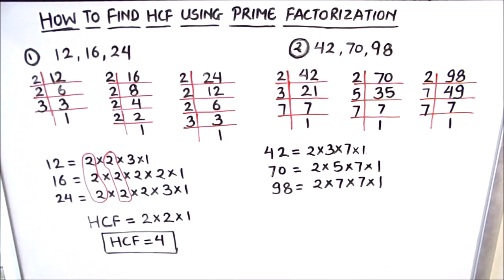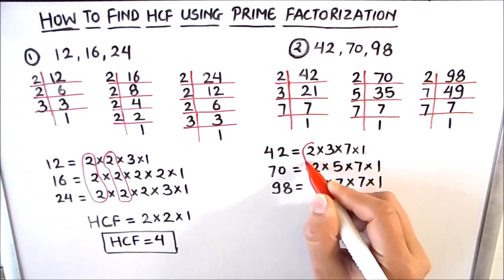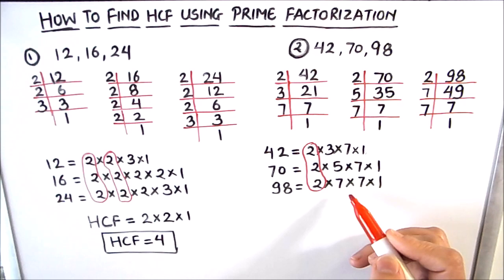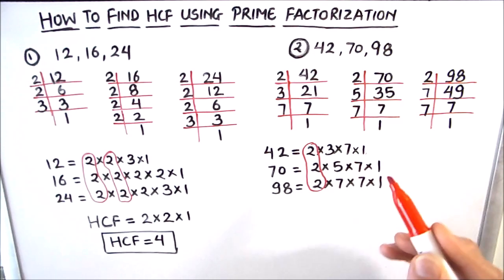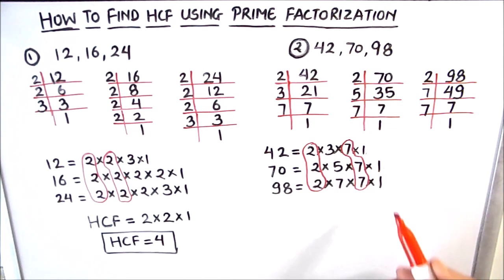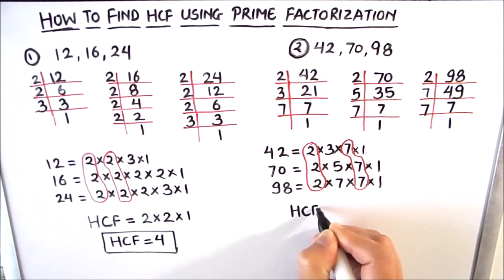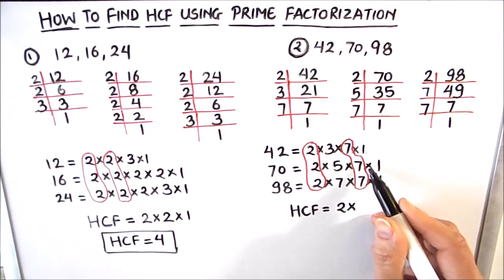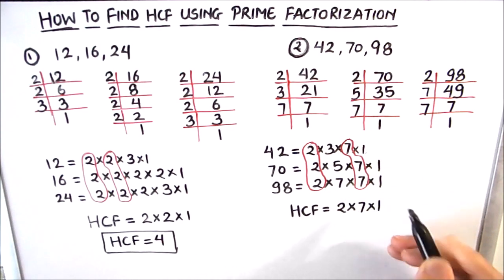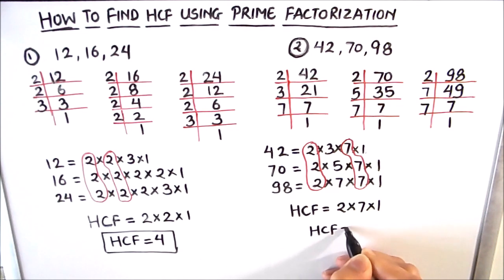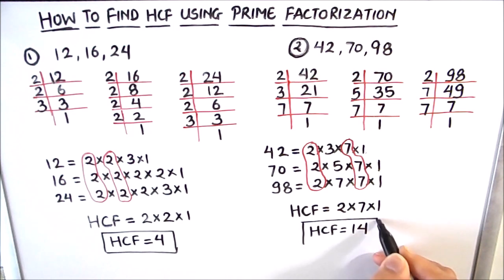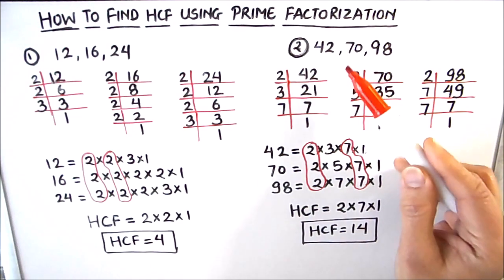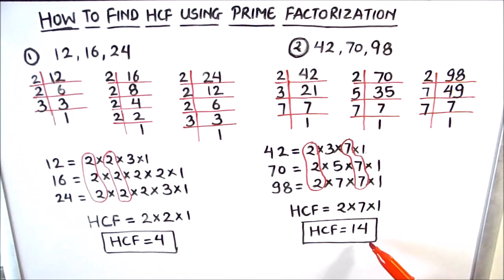Now we find the common factors. 2 is common to all three numbers. 3 is only in 42, not the others. 7 is common to all three numbers. 1 is common to all. So the HCF is the product of the common factors: 2 × 7 × 1 = 14. The HCF of 42, 70, and 98 is 14, meaning all three numbers are fully divisible by 14 and it is their highest common factor.